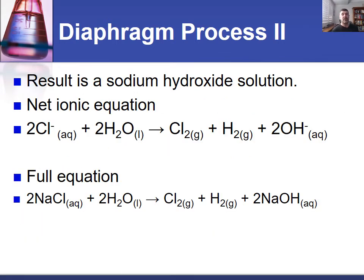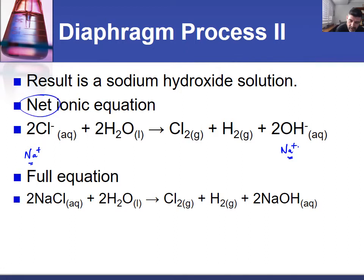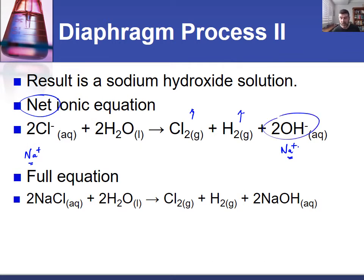Breaking down each process: the sodium ions remain in solution at the beginning and end, making them spectator ions not included in the net ionic equation. What we have are the chloride ions from the brine and water participating in the reaction. Our two gases — chlorine and hydrogen — are both given off, one at the cathode and one at the anode. The other product of water reduction is hydroxide ions. When we combine these into full equations, we get our desired product: sodium hydroxide.